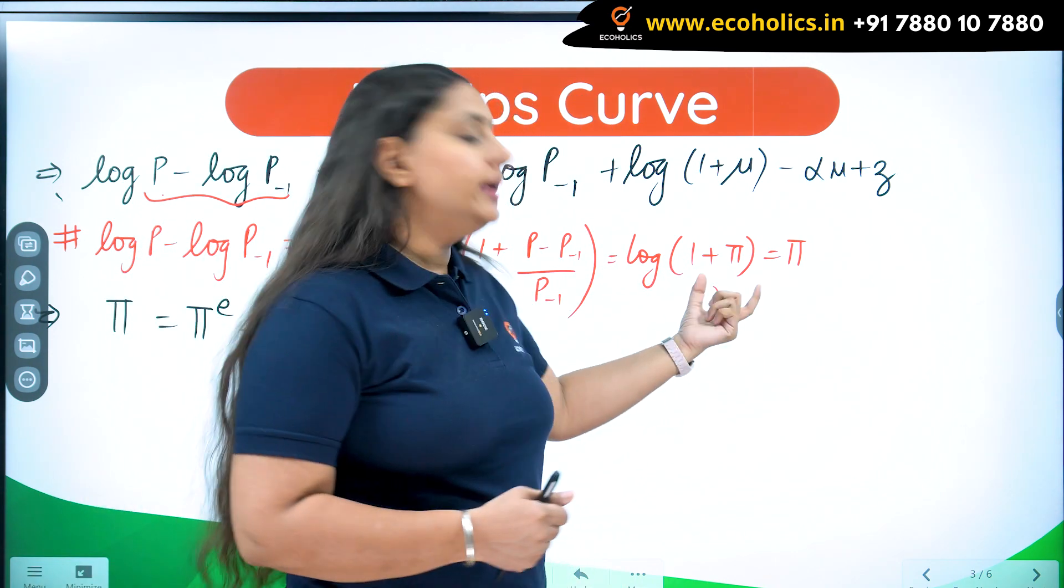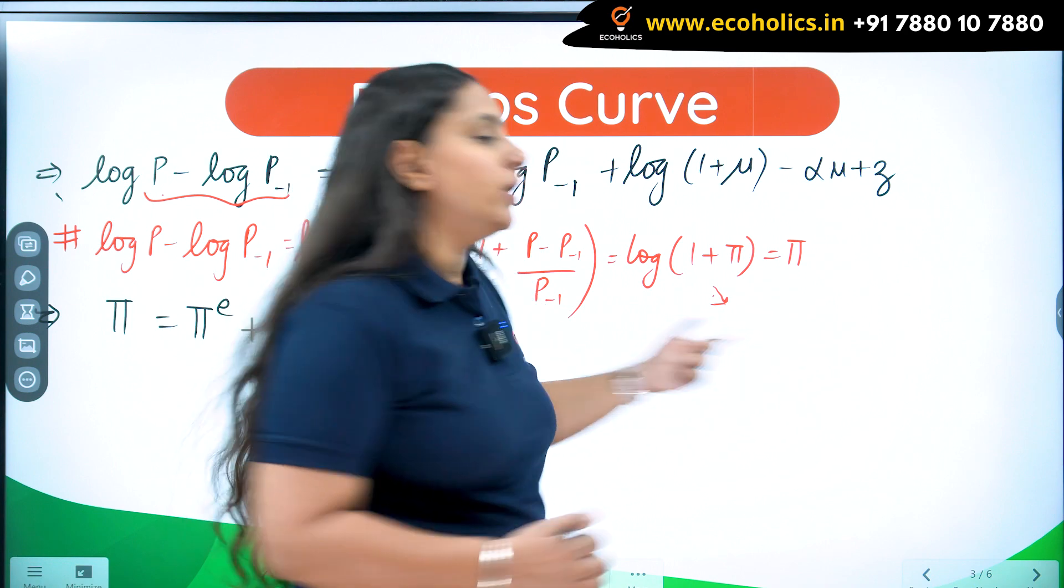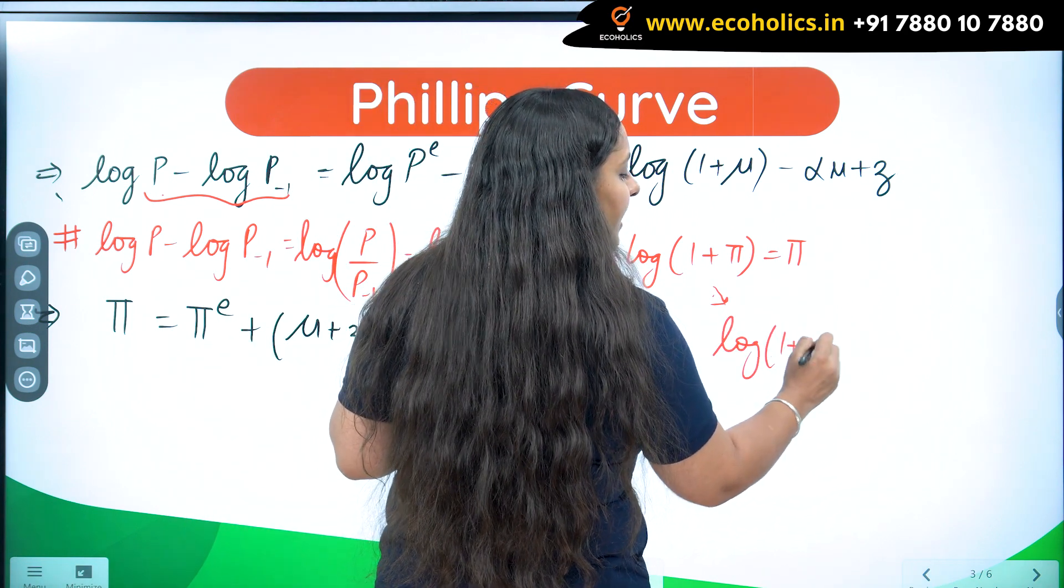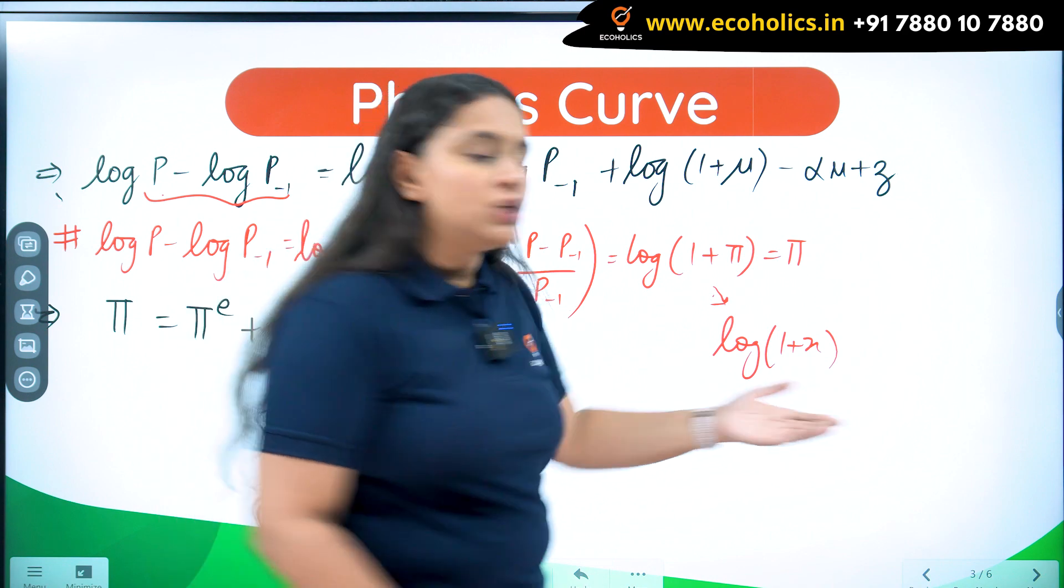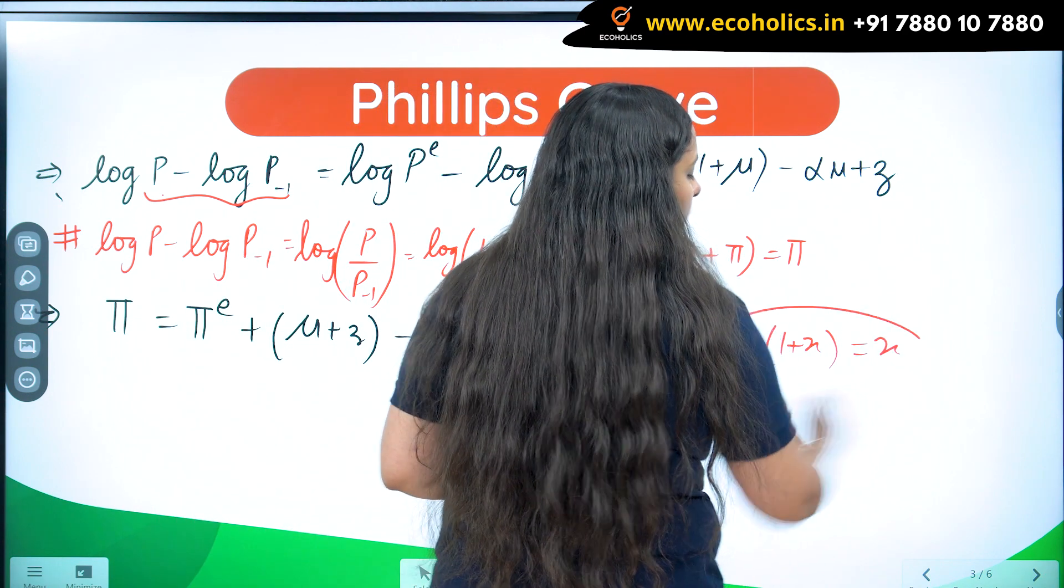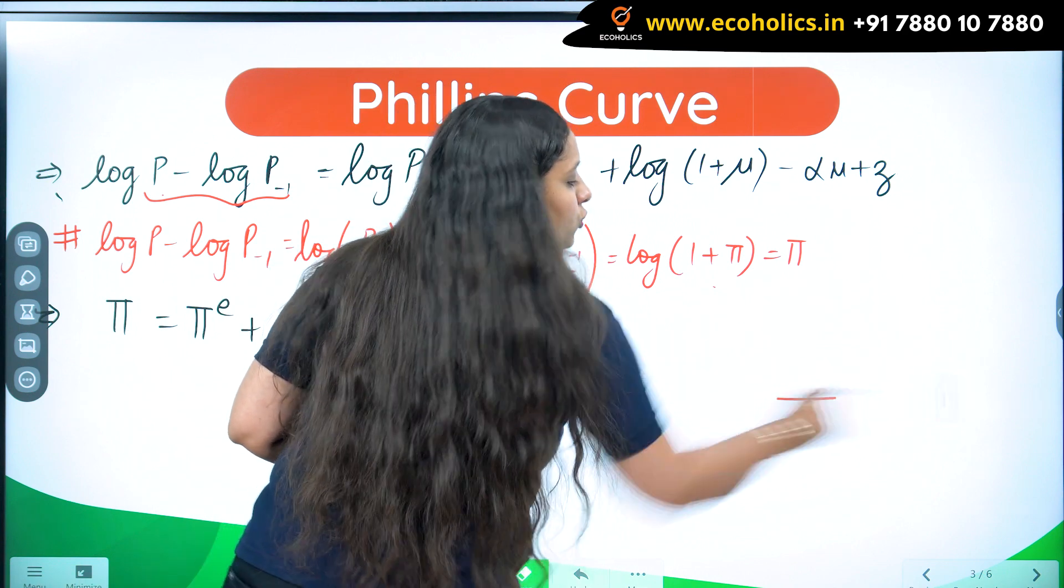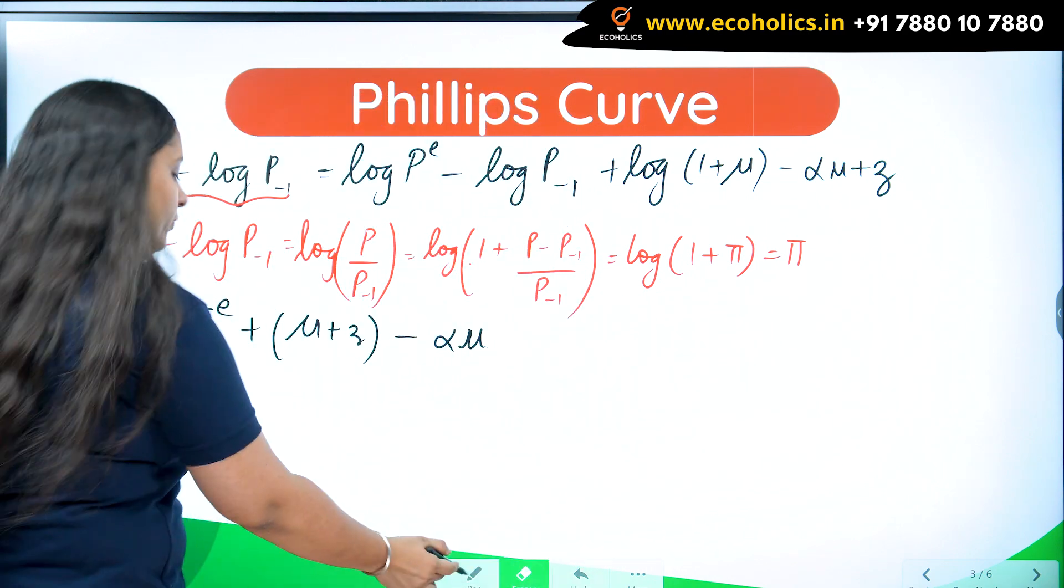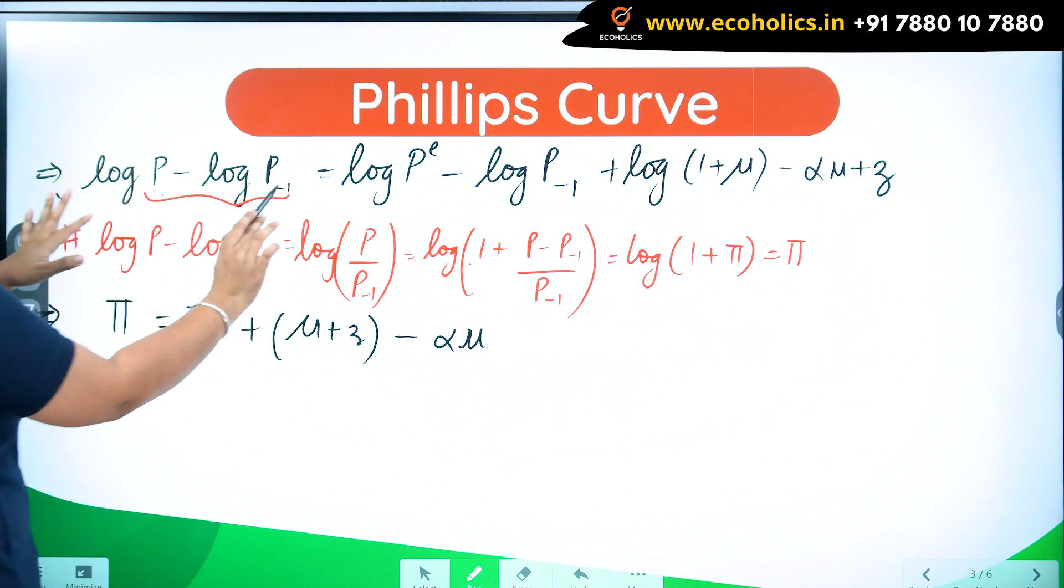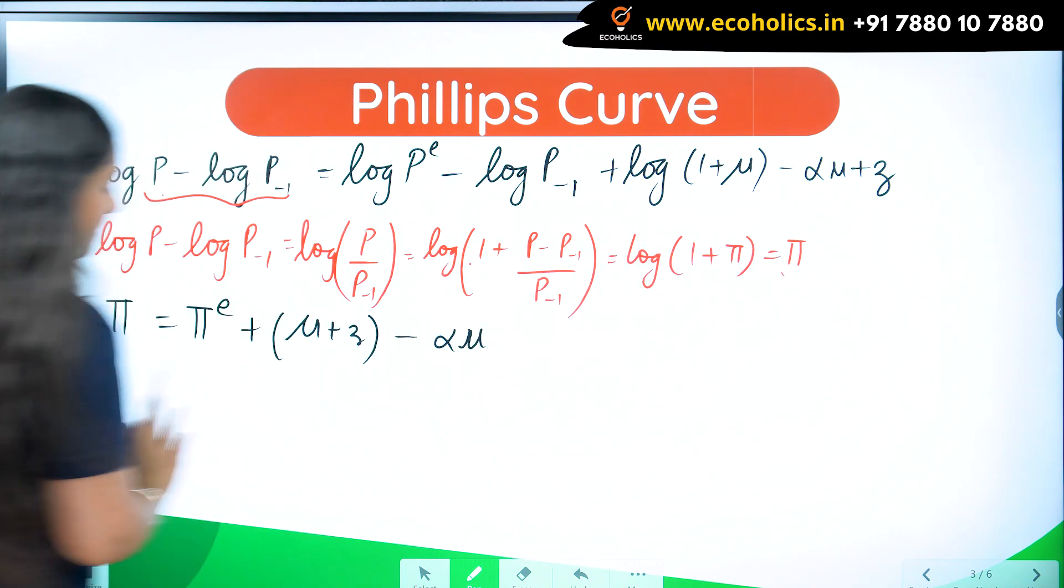Whenever you have log(1 plus x) and if x is sufficiently small number, I can write it equal to x only. That is the same thing. I have used this property of log. So log P minus log P minus 1 will become pi.